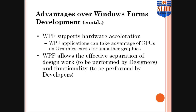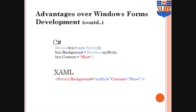Another advantage is hardware acceleration. The WPF graphics system takes advantage of graphics hardware to minimize CPU usage. Additionally, a developer can implement the same code that was implemented in C# 2.0 WPF technology in XAML with fewer lines of code.